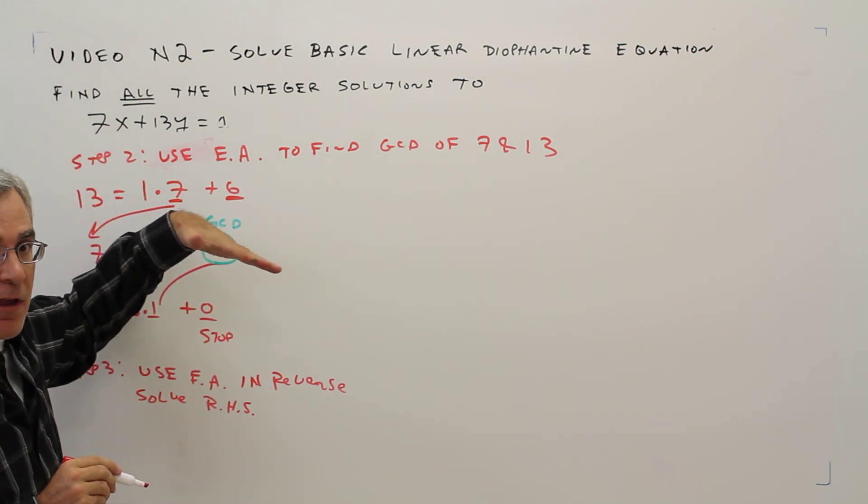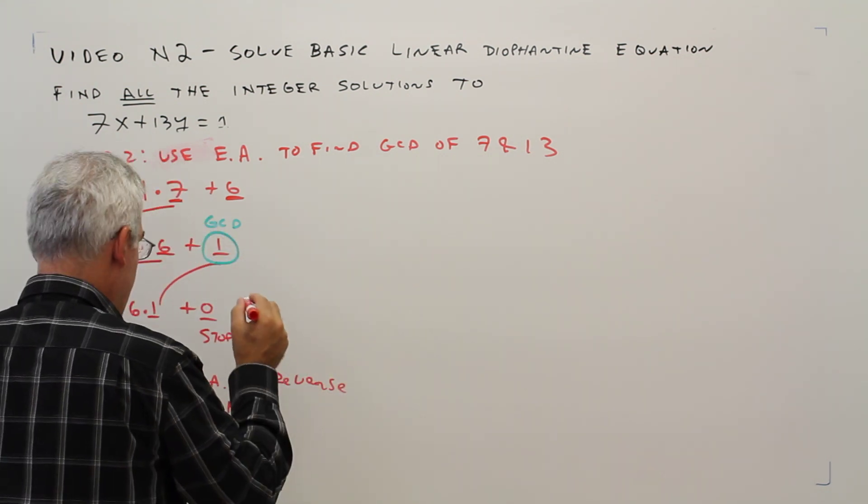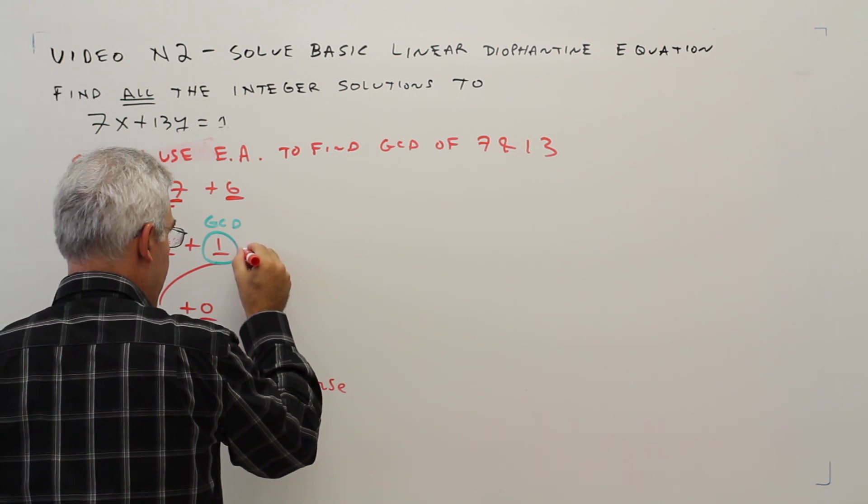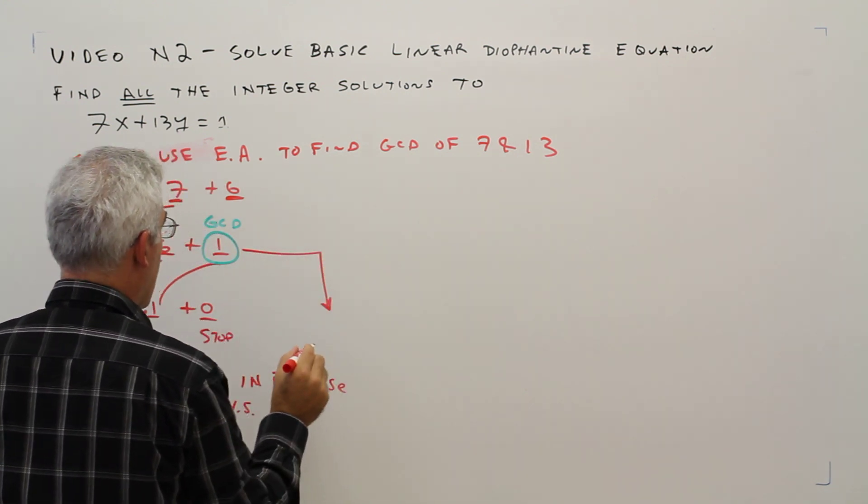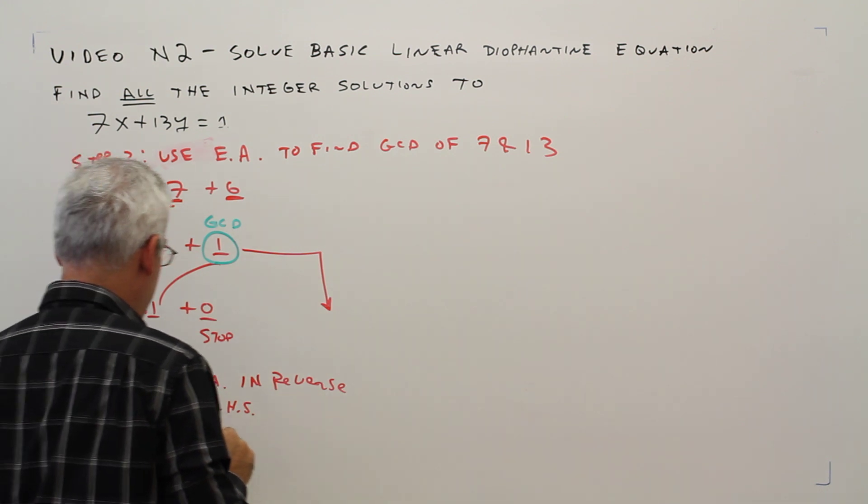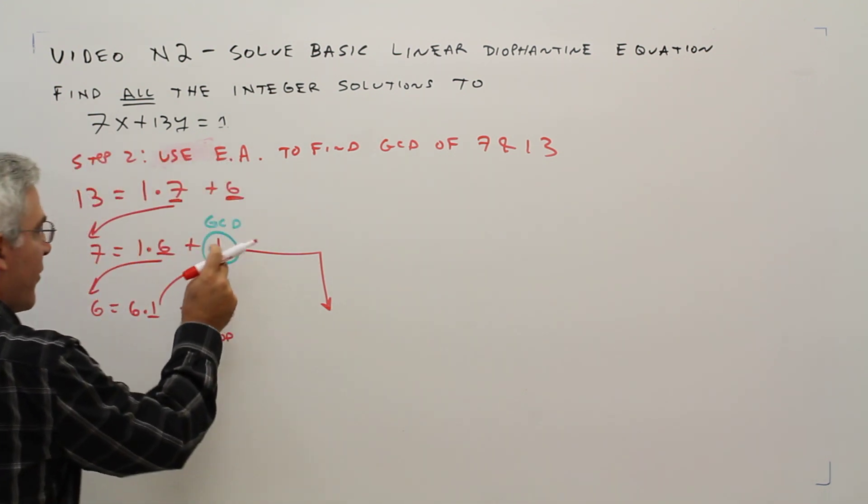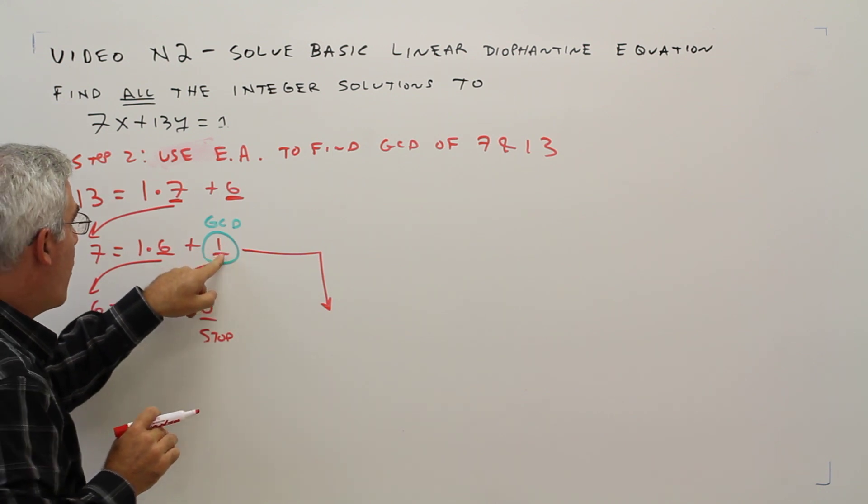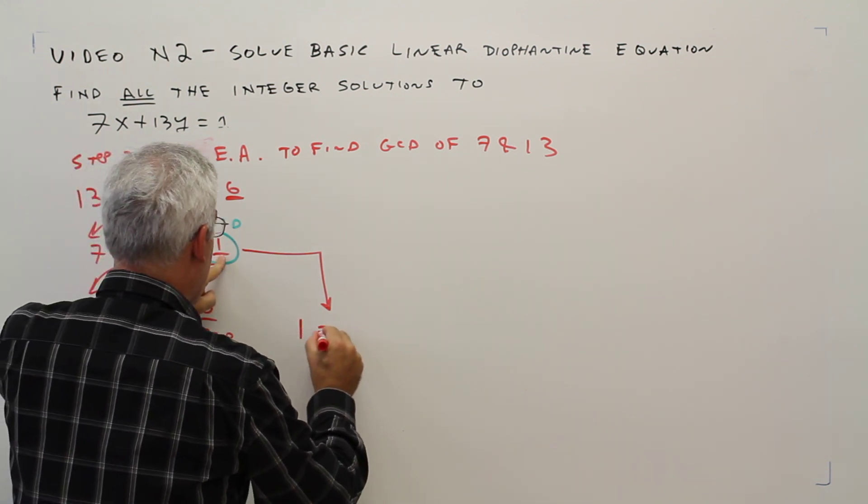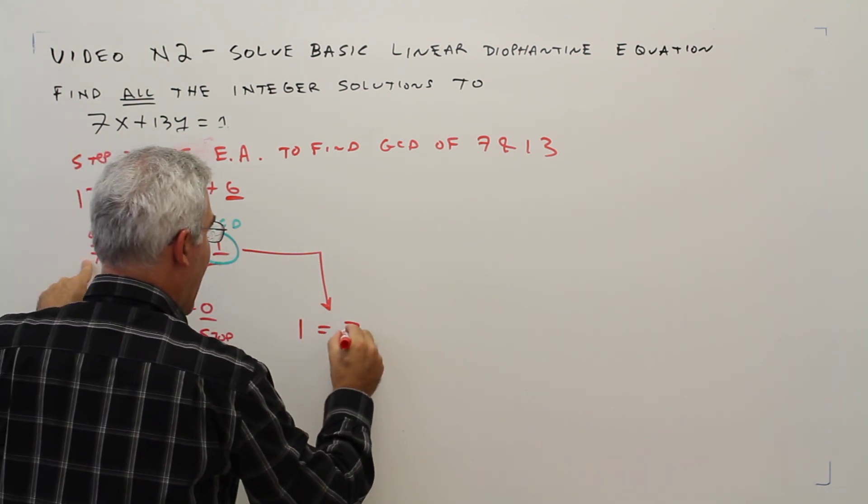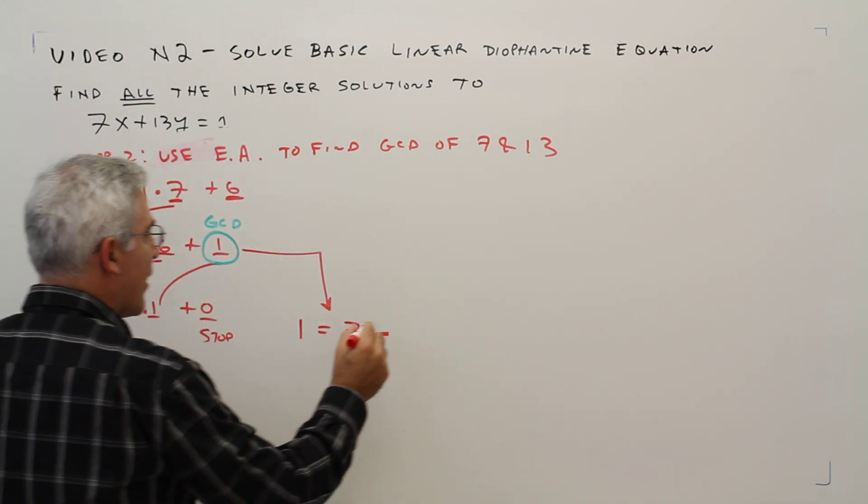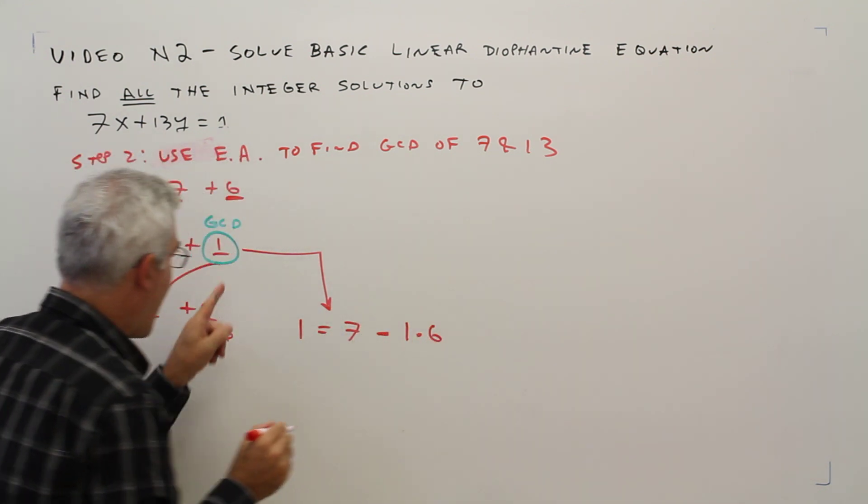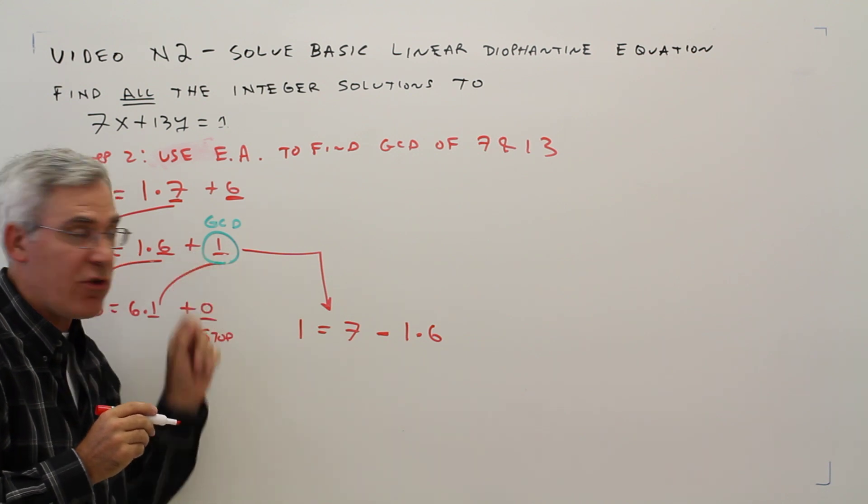And we're going to start at that GCD. So right here, I'll just go like such. Okay, I'm going to erase this right here. So starting at the GCD step, solve for the right-hand side. So 1 equals 7 minus 1 times 6. All I did is I got that GCD by itself.